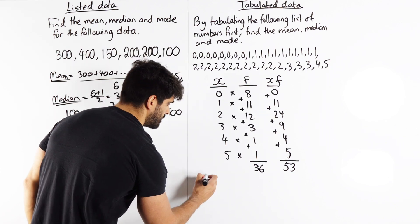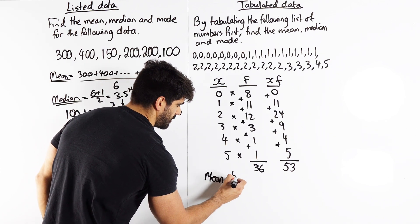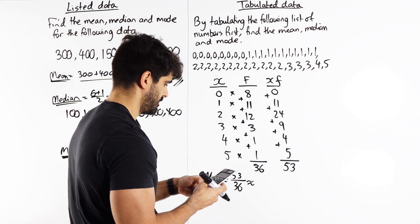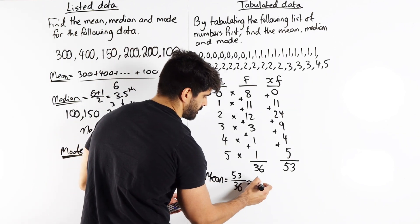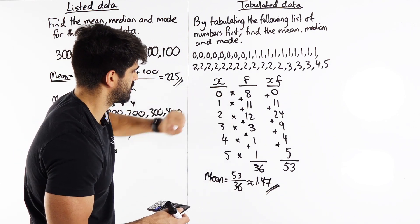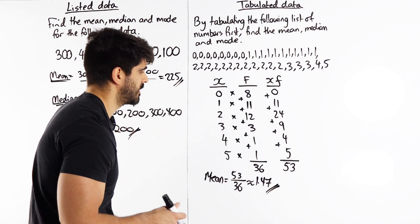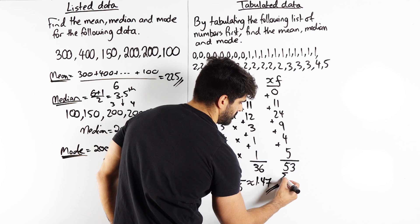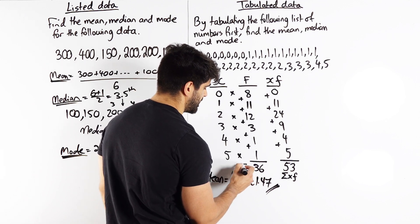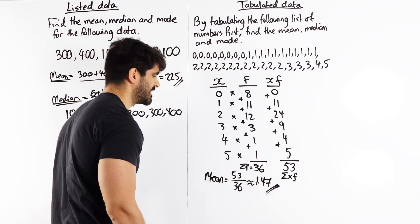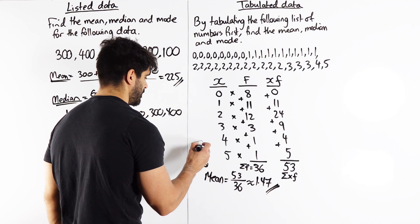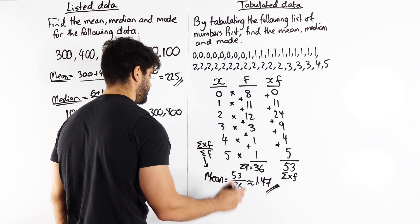So our mean is 53 divided by 36, which is approximately 1.47. That makes sense because the highest frequencies are around the lower values. This column is known as sigma xf — sigma just means 'sum of' — and the denominator is sigma f, meaning total frequency. So remember: mean equals sigma xf divided by sigma f. That's why we multiply across and add the columns.